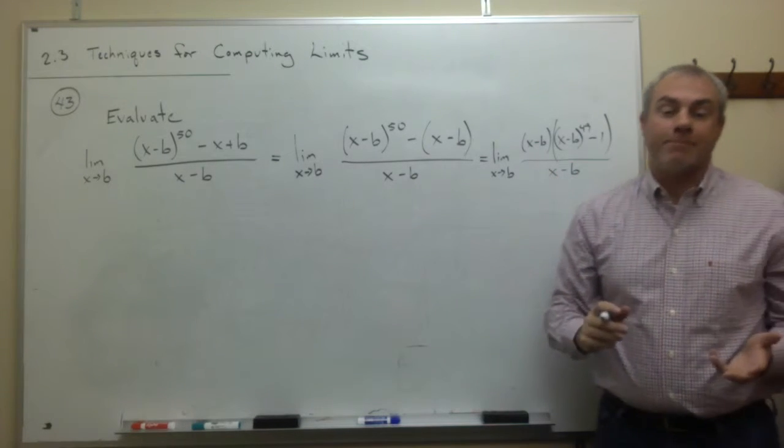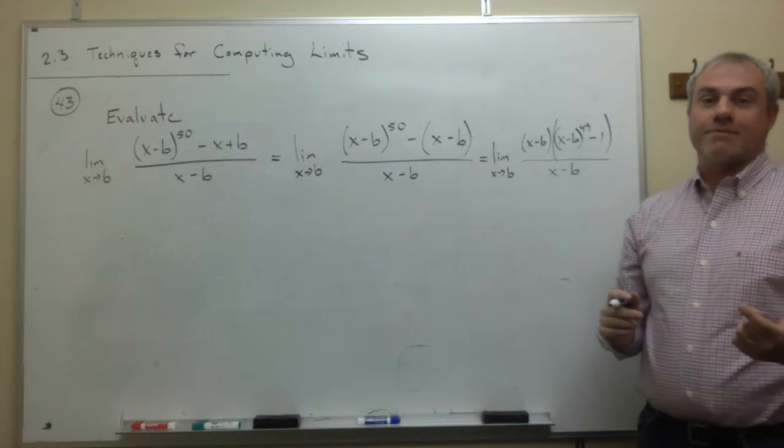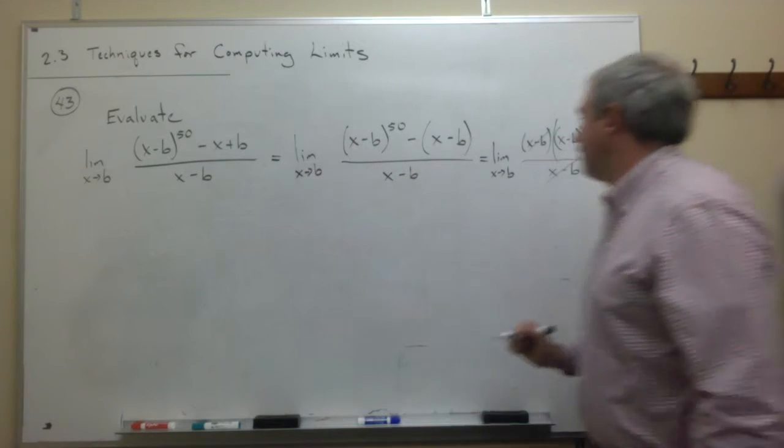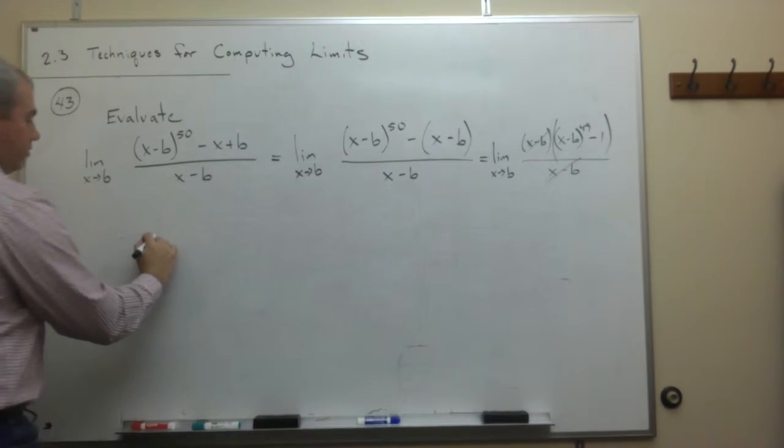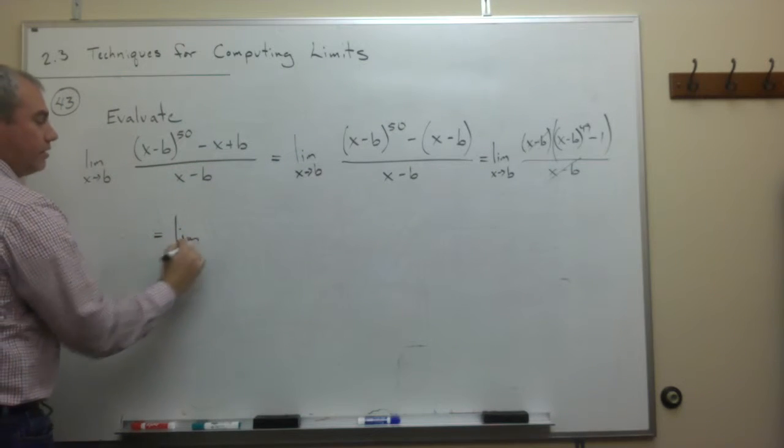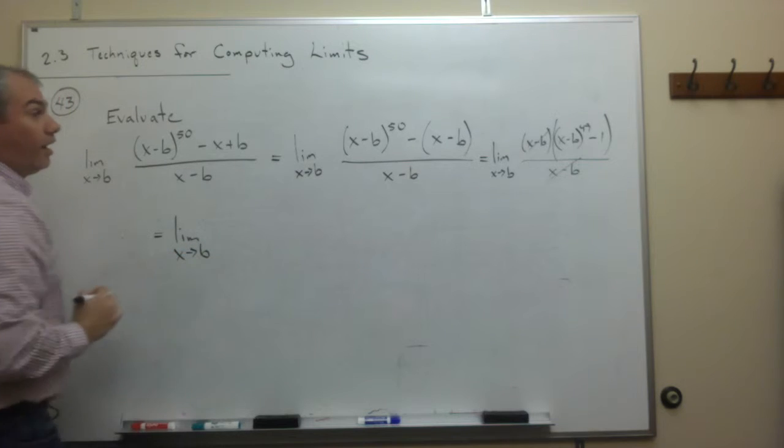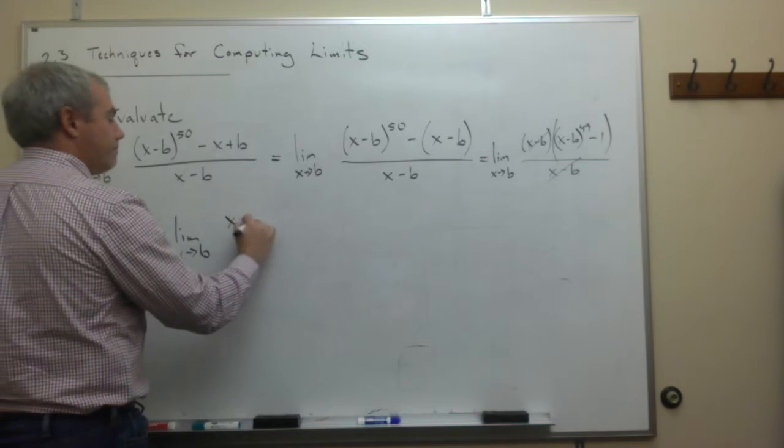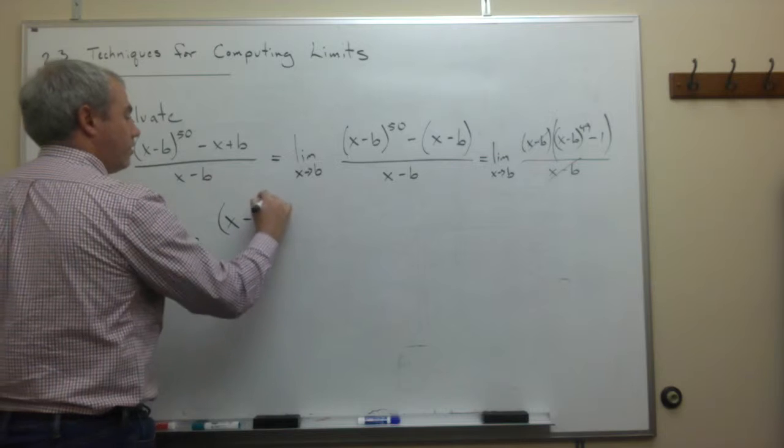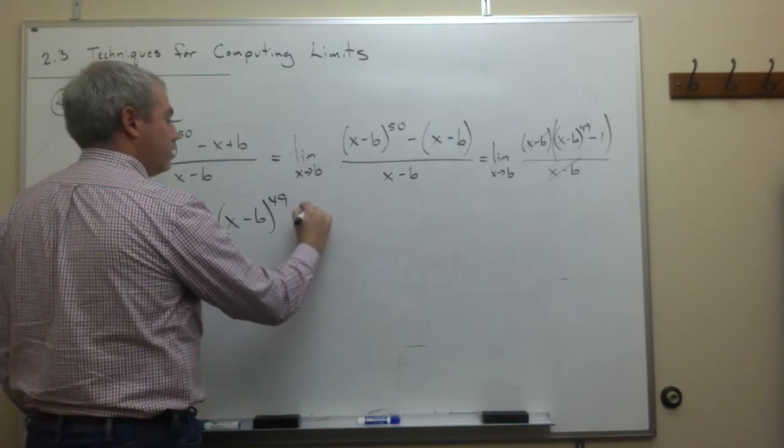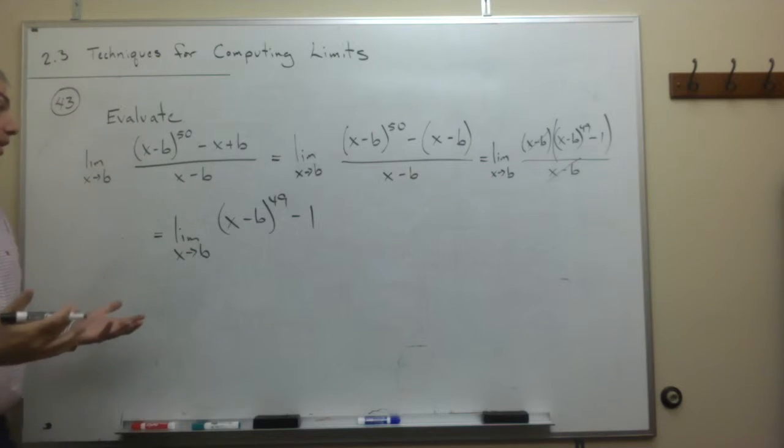So now I have an x minus b on the top, I have an x minus b on the bottom, the x minus b's cancel, and I'm left with the limit as x goes to b of x minus b to the 49th minus 1 over 1.